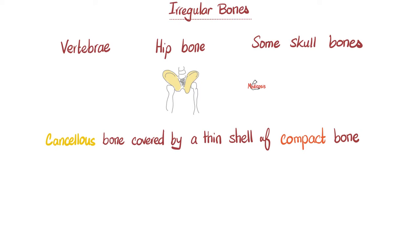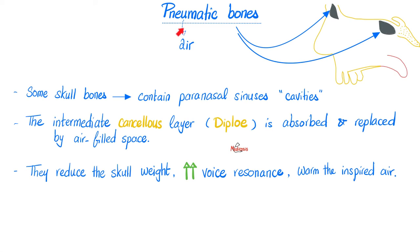Coming up next, irregular bones. Look at the hip bone — very irregular. The vertebrae are very irregular in shape. Some skull bones are very weird. They have cancellous bone covered by a thin shell of compact bone.